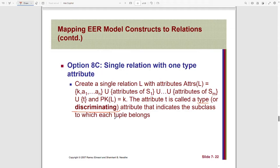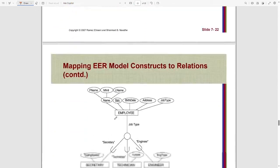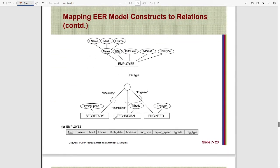An example will clear everything out. Here we can see there is only one relation named Employee, and all the attributes of the superclass Employee have been added into the table. We can also see the attributes of the subclasses are also added into the Employee relation. But among all of the attributes, we can see a different attribute named Job Type.